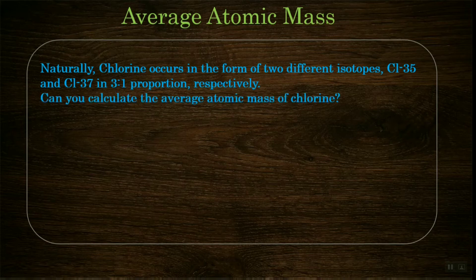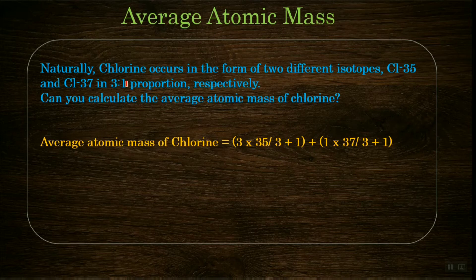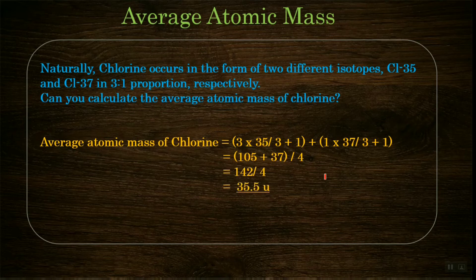To calculate the average atomic mass of chlorine: since the ratio is 3:1, Cl-35 is in 3 parts and Cl-37 is in 1 part. So the calculation is (3 × 35)/(3+1) + (37 × 1)/(3+1), which equals (105 + 37)/4 = 142/4. Therefore the average atomic mass of chlorine is 35.5.